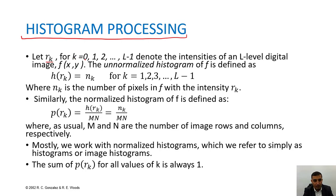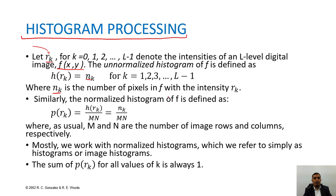Let r_k for k equal to 1 up to L minus 1 denote the intensity of the L-th level of an image f(x, y). So at pixel (x, y) we have an intensity r_k. The unnormalized histogram of f is defined as h(r_k) = n_k, where n_k is the number of pixels in f having intensity r_k.